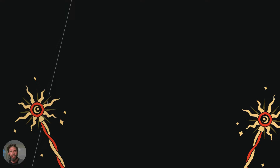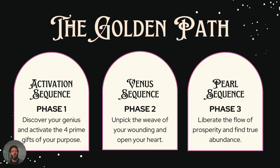Now we talk about the golden path, which are the three components of a Gene Keys profile. We want to dig where the water is the shallowest. When you're digging a well, it's easiest to dig where the water is closest to the surface, not where it's deepest. That's why typically we would start with the activation sequence. Because trying to open your heart without being activated, without knowing that there is more to the world than you can see, is nearly impossible.